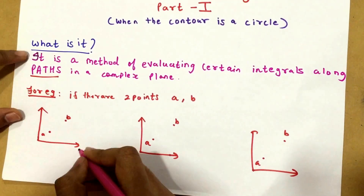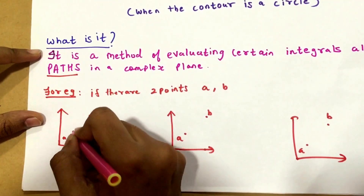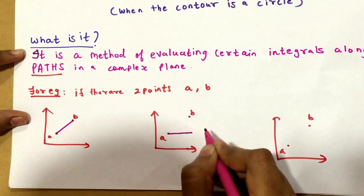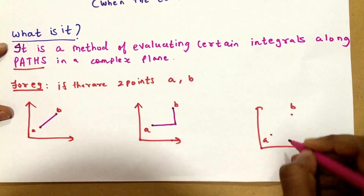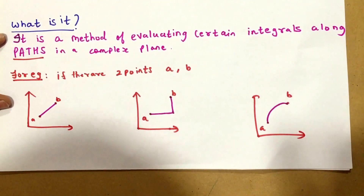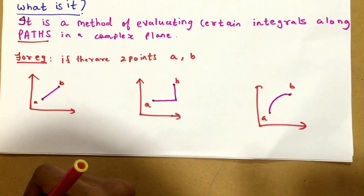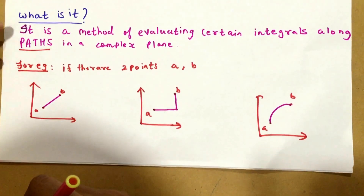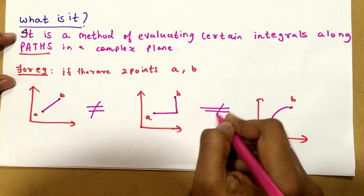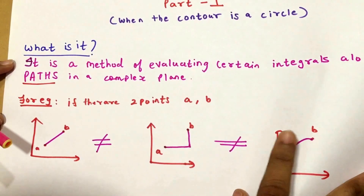So if there are two points A and B in my complex plane, I can connect them using a straight line, or I can connect them by going horizontally and then travelling a distance vertically, or I can connect them using a parabola. In complex integration, a path is of utmost importance — that is, this integral is not equal to this integral is not equal to this integral. So that's the major difference between a normal integration and a complex integration.